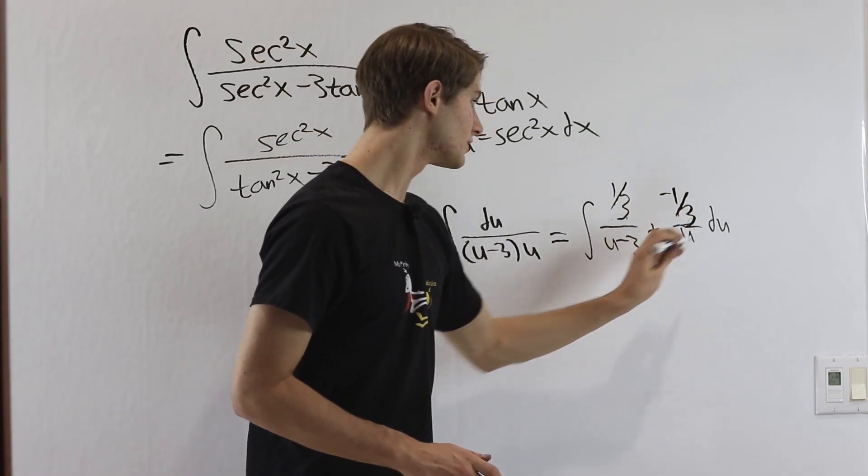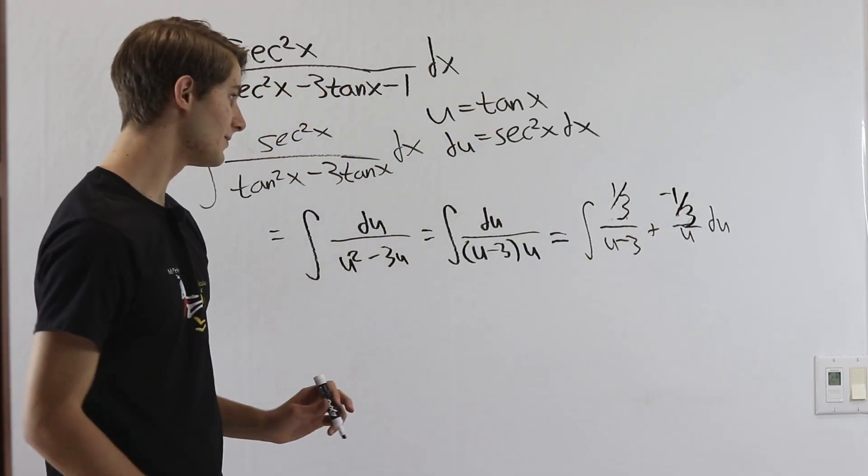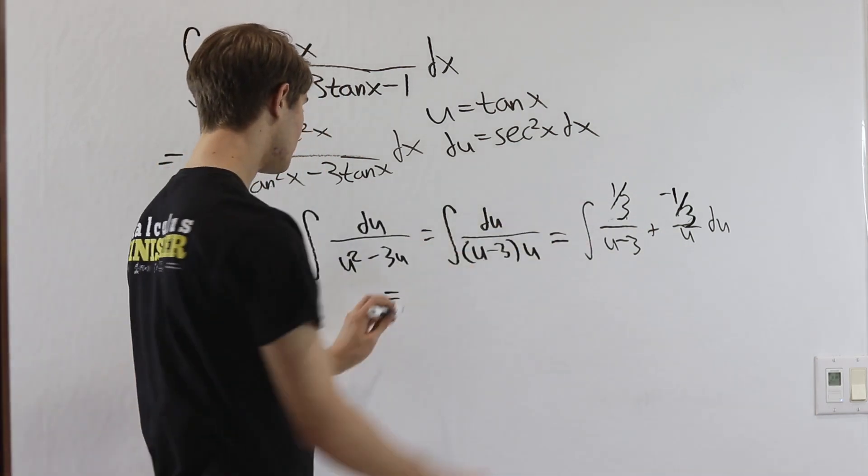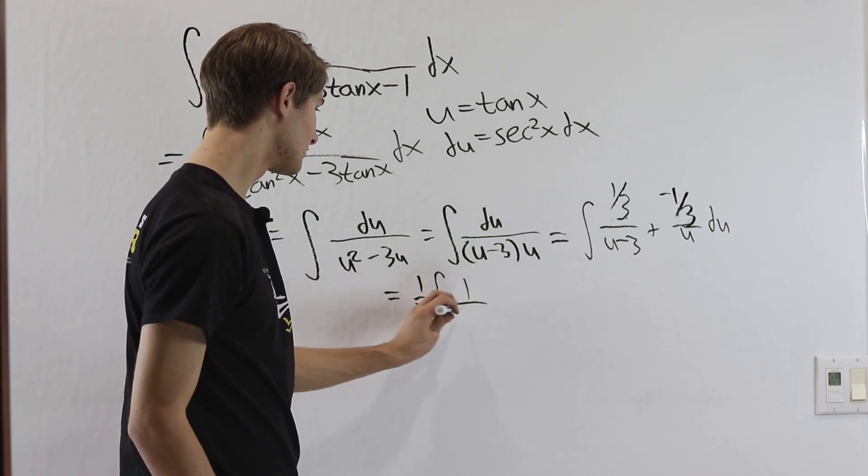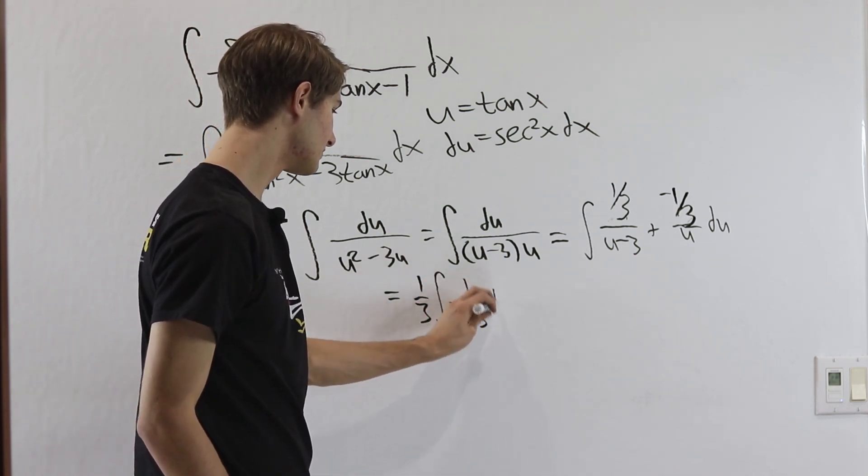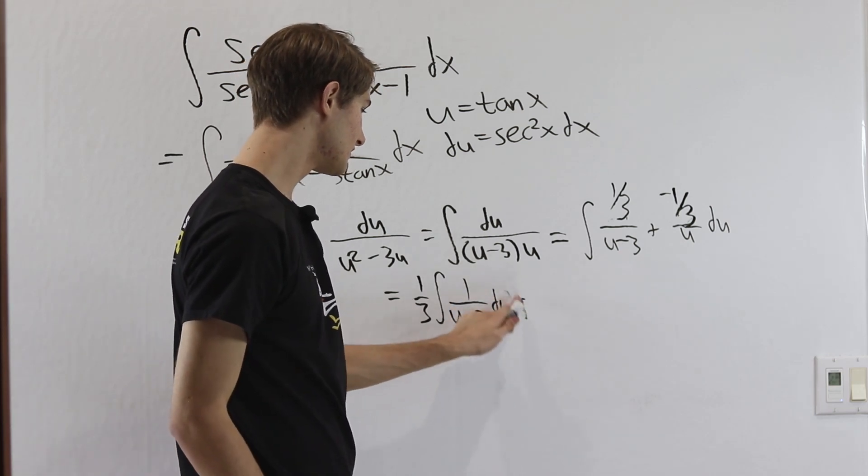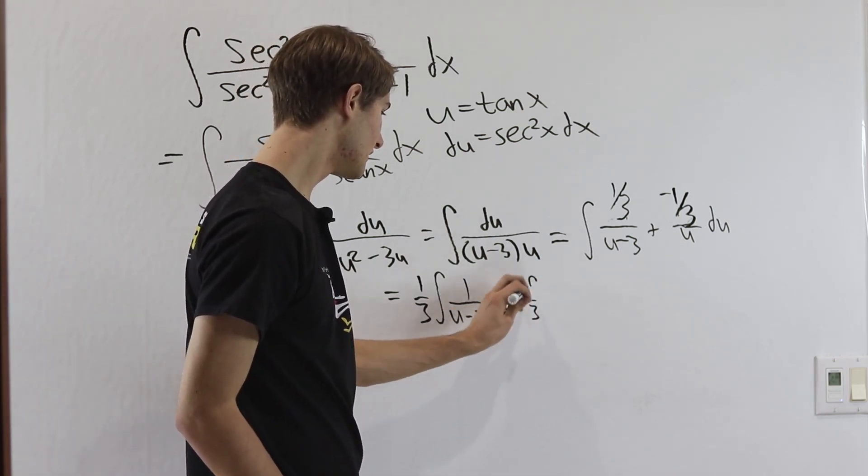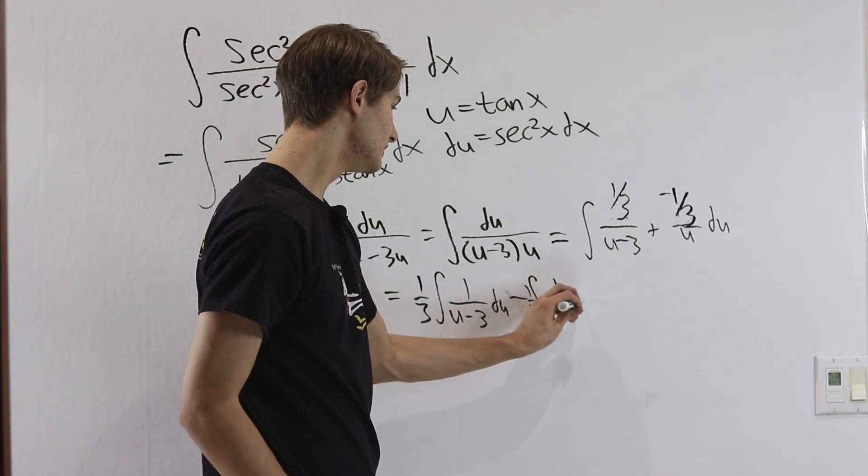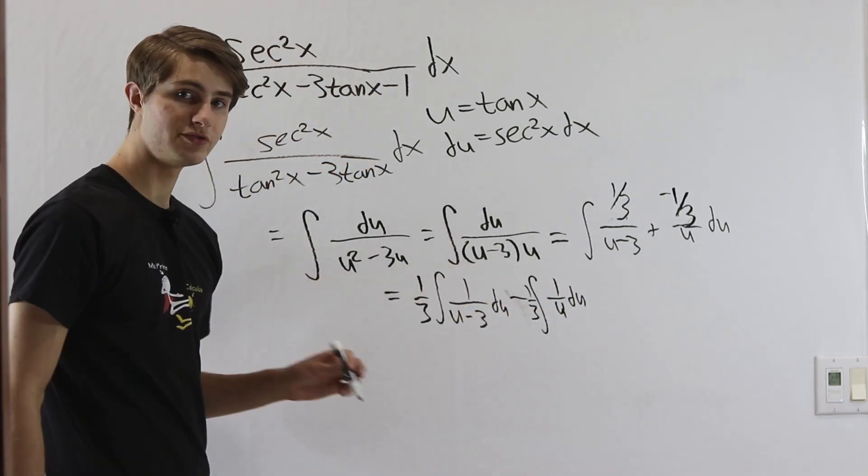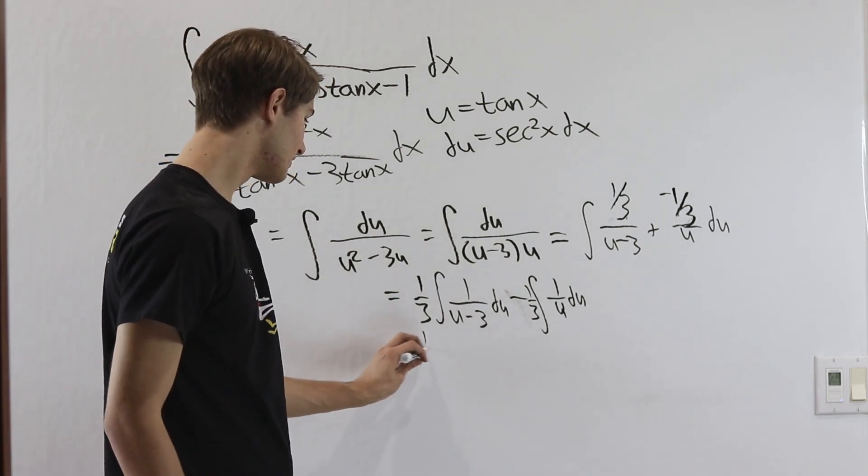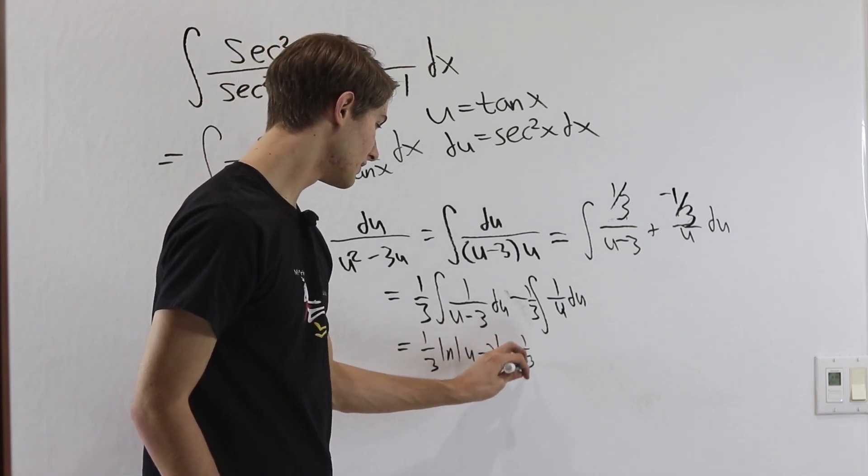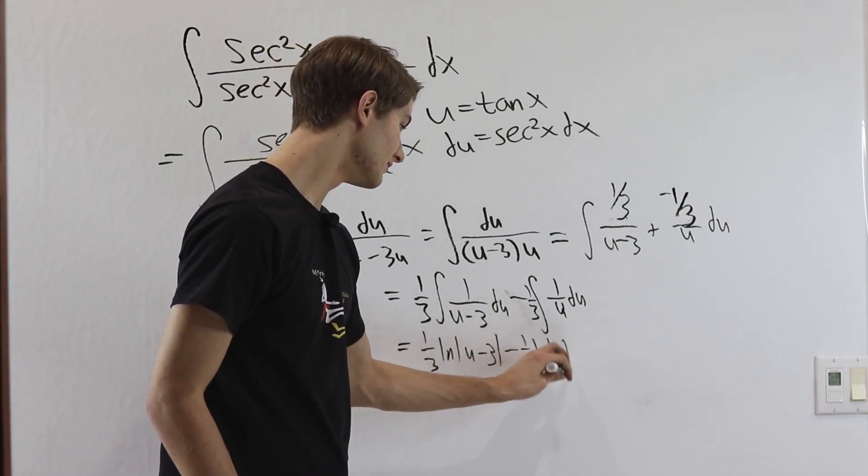So those are the two coefficients that we need for our integral and then we can split this up into two parts. So this is going to equal we pull the 1 third to the outside. We get 1 third integral of 1 over u minus 3 du plus and then this is going to turn into a minus because we have a negative 1 third integral of 1 over u du. These are both fairly simple to evaluate so this is going to give us 1 third natural log of u minus 3 minus 1 third natural log of u.